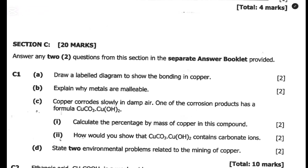Now let us look at the first question. C1 asks us to draw a labeled diagram to show the bonding in copper. One thing you should know is that copper is a metal, so we are going to look at metallic bonding.